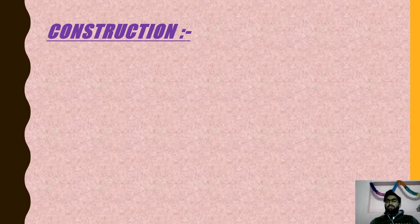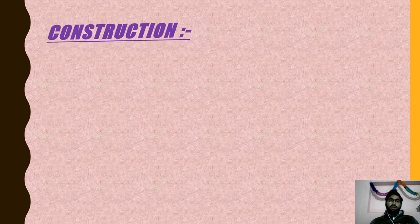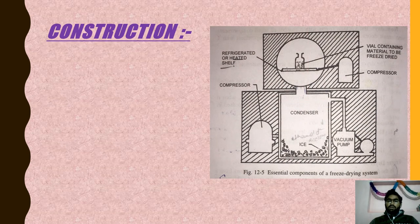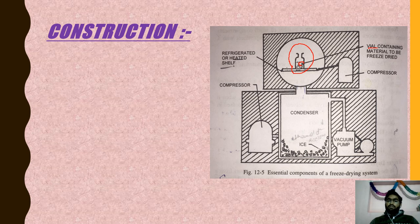Regarding construction of the freeze dryer: there is a container — vials, bottles, or ampoules — holding the material to be dried. Below it is the refrigerator and heated shelf, connected to a compressor. Below that is a condenser to condense the vapors. On the side is an additional compressor and a vacuum pump.